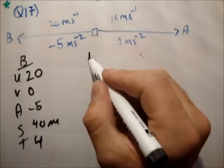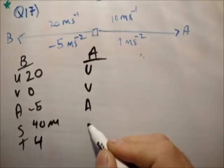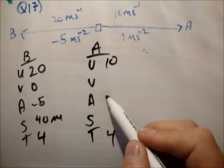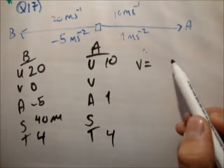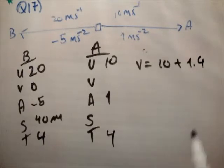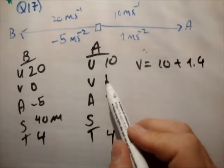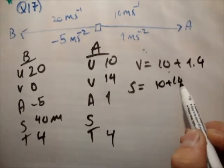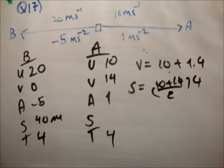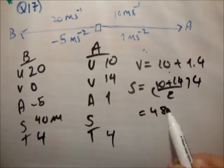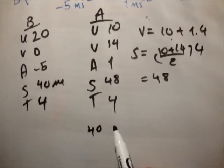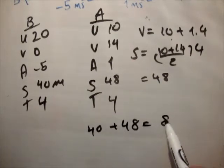Secondly, we'll go on to car A. So the time is 4 seconds. His initial speed is 10 meters per second and his acceleration is 1. So V equals U plus AT equals 10 plus 1 times 4, which is 14. And S equals U plus V over 2 times T, 10 plus 14 over 2 times 4. So that's 24 divided by 2 equals 12, 12 times 4 equals 48.